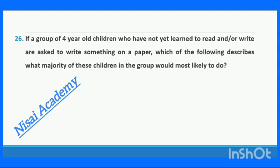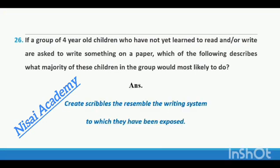Question 26: If a group of 4-year-old children who have not yet learned to read or write are asked to write something on a paper, what would the majority of these children most likely do? The answer is: they would most likely create scribbles that resemble the writing system to which they have been exposed.